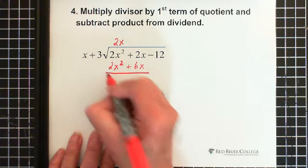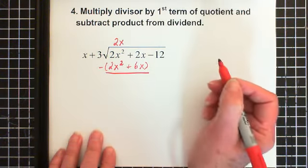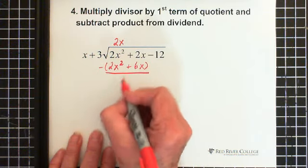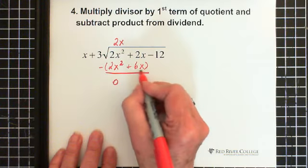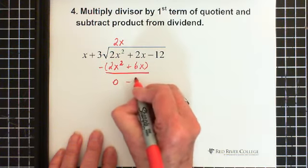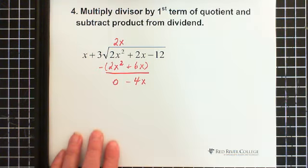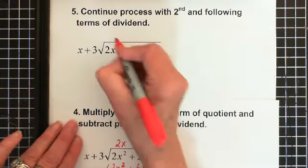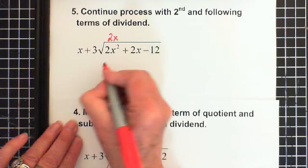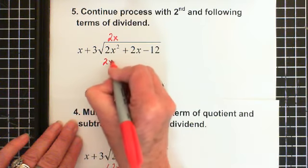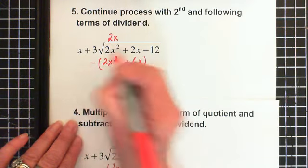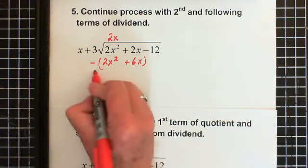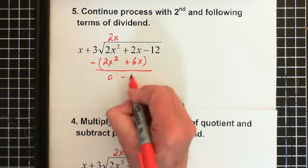Then we subtract this product from the dividend, just like in long division. So 2x squared minus 2x squared is 0. And then we have 2x, and this is a minus 6x, which gives us minus 4x. So we're left with 0 minus 4x.